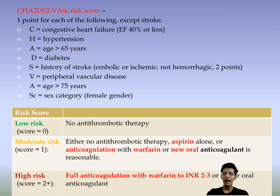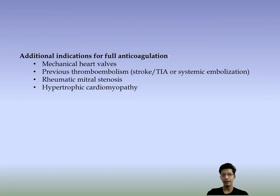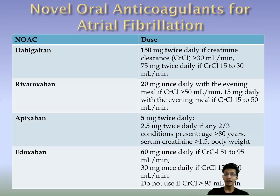With warfarin, maintain the INR between 2 to 3. Additional indications for full anticoagulation include CHA2DS2-VASc score of 2 or more, previous mechanical heart valve, previous thromboembolism, rheumatic mitral stenosis, and hypertrophic cardiomyopathy.